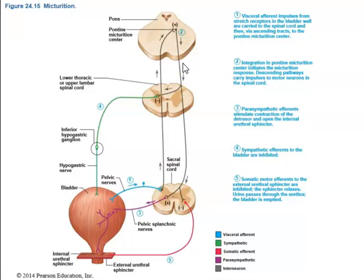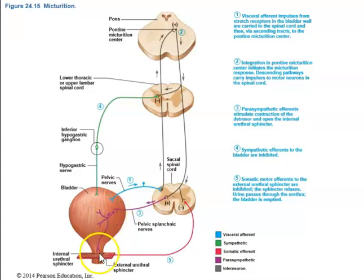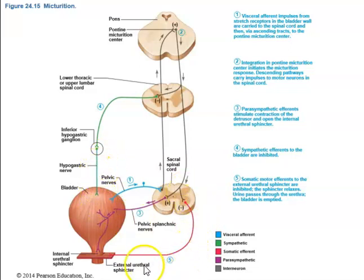Parasympathetic efferents stimulate contraction of the detrusor muscle and open the internal urethral sphincter. Sympathetic efferents are inhibited. Somatic motor efferents to the external urethral sphincter — which is voluntary — are also inhibited, allowing the sphincter to relax so urine passes through the urethra and the bladder is emptied.